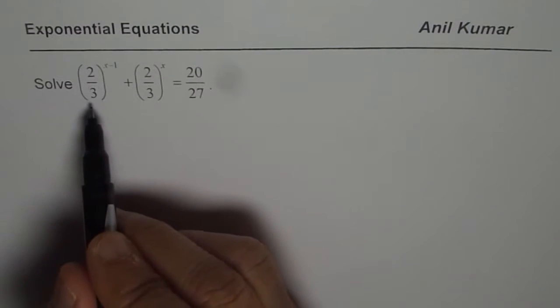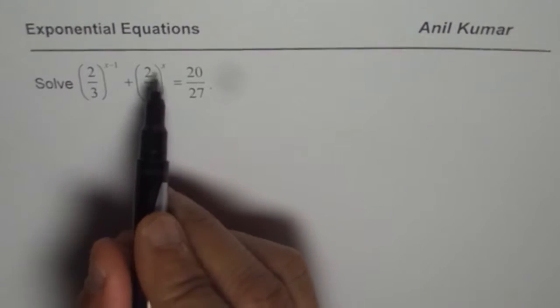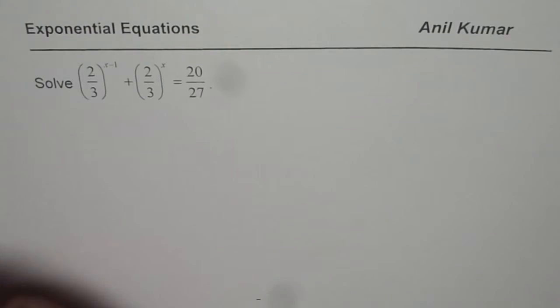Solve 2 over 3 to the power of x minus 1 plus 2 over 3 to the power of x equals 20 over 27.